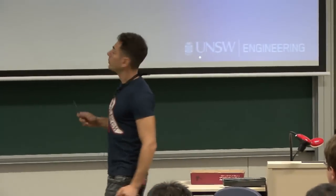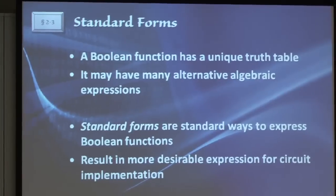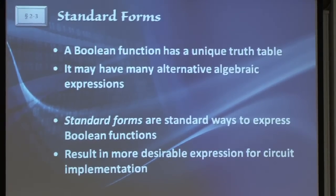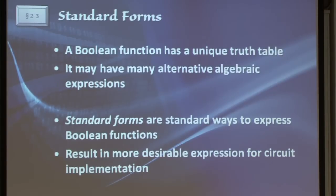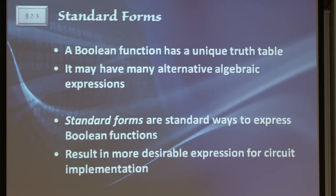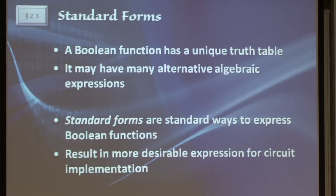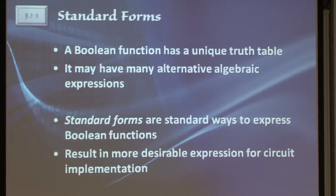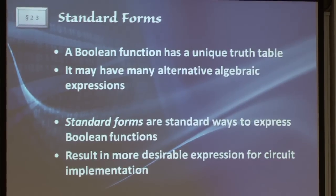What we'll cover in most of today's lecture are what's called standard forms. When you express a Boolean expression — a function — we say we have one unique truth table to express this function, but we can have many different expressions or circuits to implement that same function. We came up with standard forms to express those Boolean expressions, and using those standard forms will really lend themselves to implementing simpler or more cost-effective circuits. Then comes the question of how to evaluate a circuit and define cost criteria.